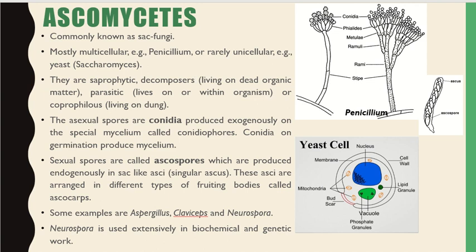Here you can see conidiophores, and conidia are formed on these conidiophores. On germination, conidia produce mycelium. Sexual spores are called ascospores, which are produced endogenously in sac-like asci. These asci are arranged in different types of fruiting bodies called ascocarps. Some examples are Aspergillus, Claviceps, and Neurospora, which is used extensively in biochemical and genetical work.